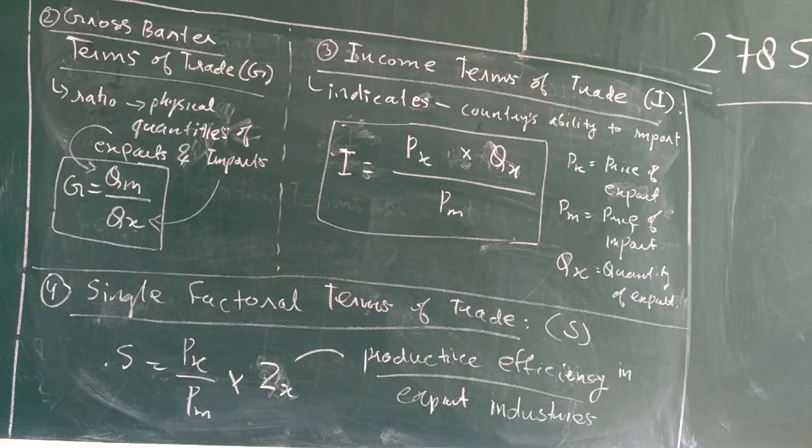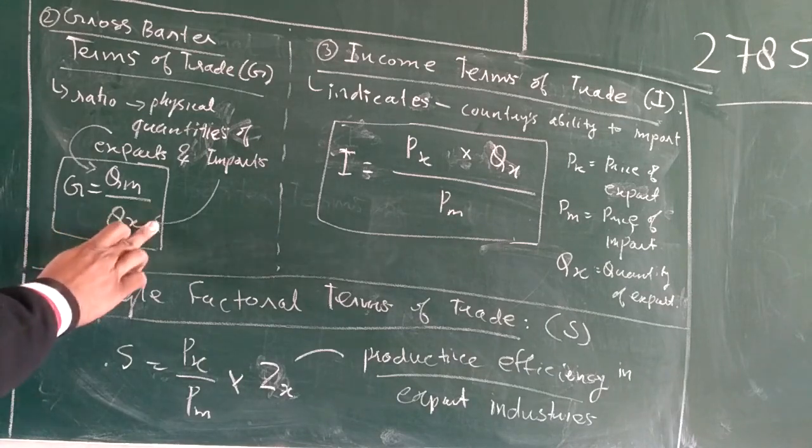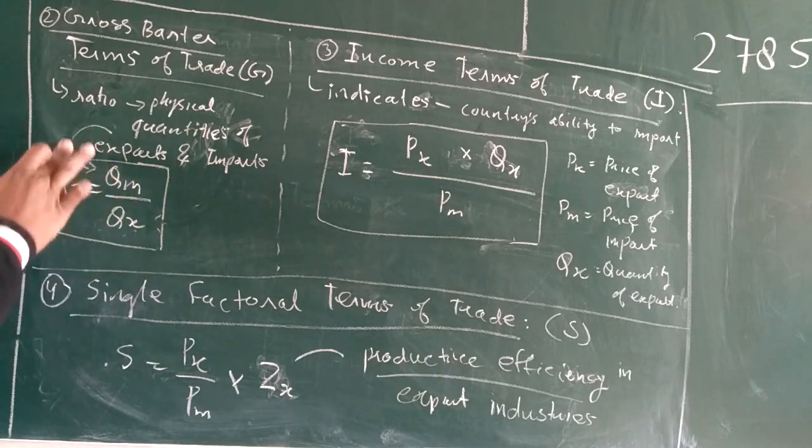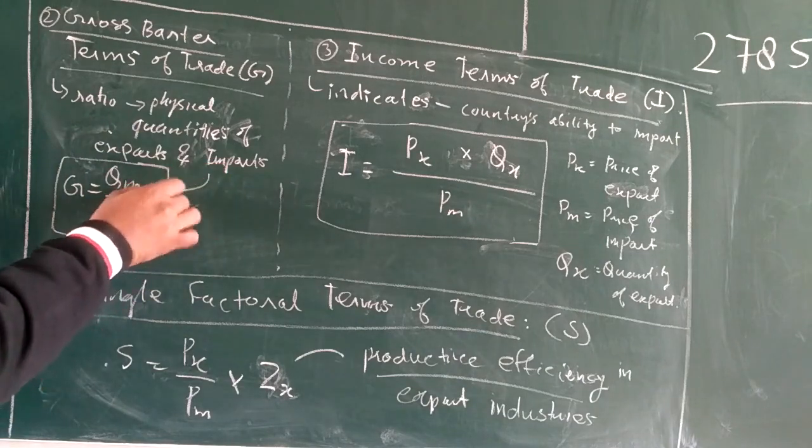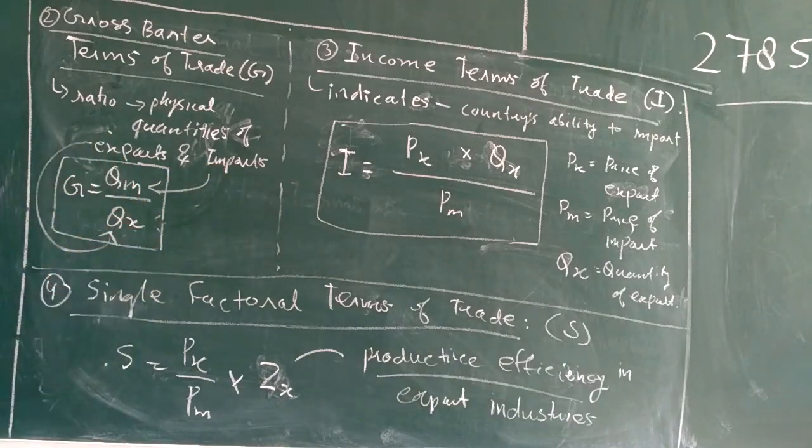This ratio of quantity of exports and quantity of imports is called gross barter terms of trade, denoted by G. Next is income terms of trade, which is signified by the letter I.